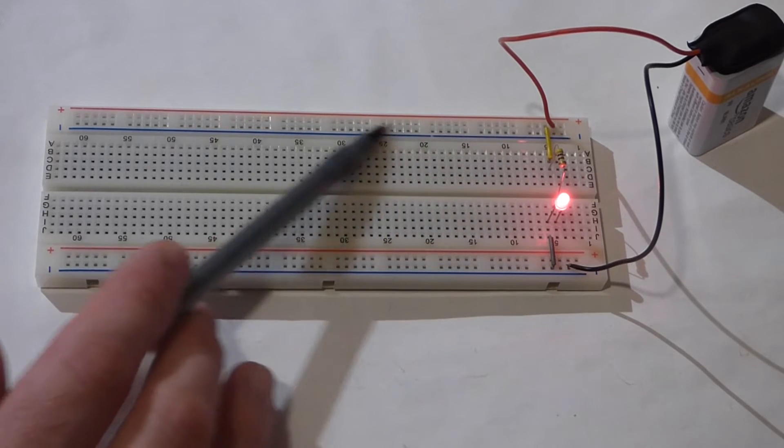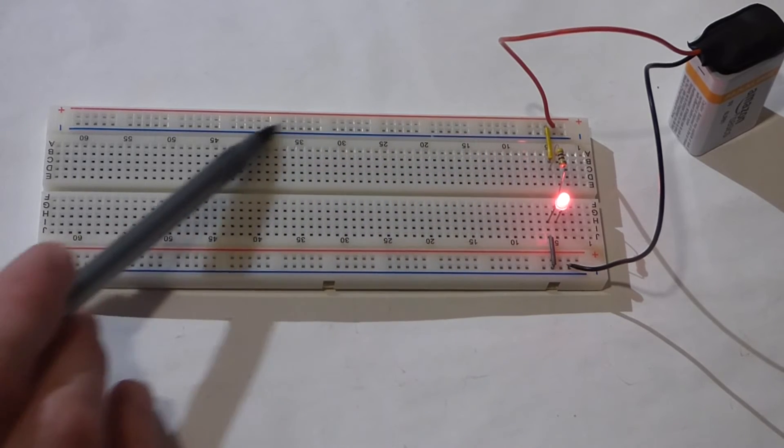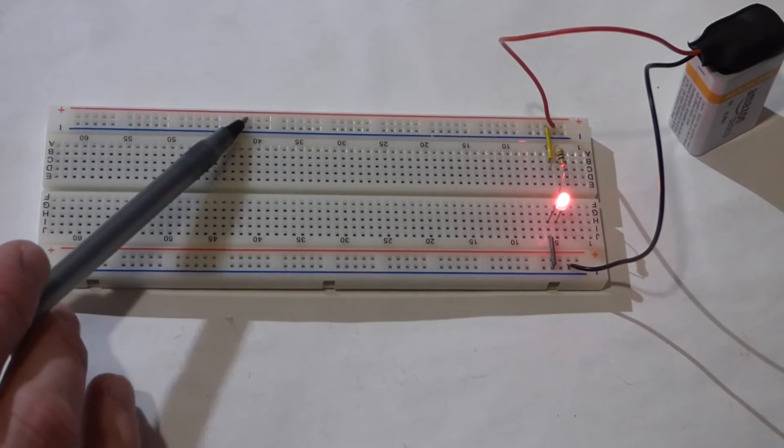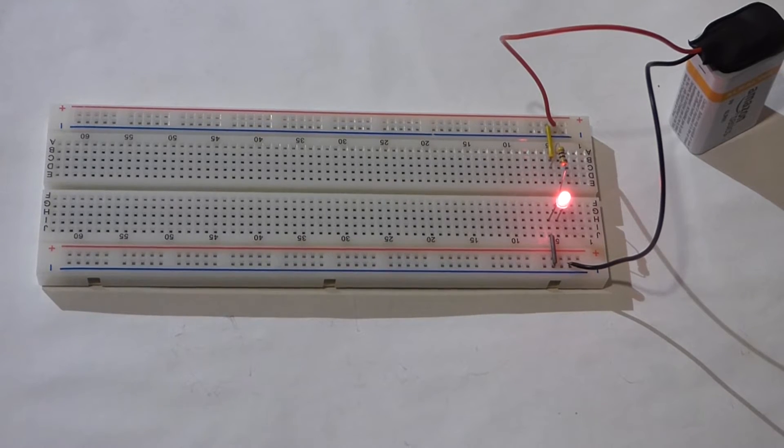Now anywhere along this far row here where you see a red line you can connect a wire and that's just like connecting directly to the positive part of the battery, the positive terminal.